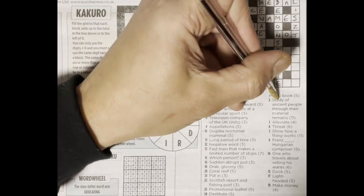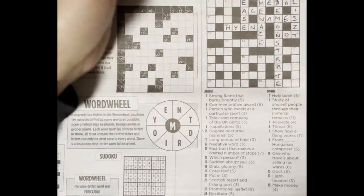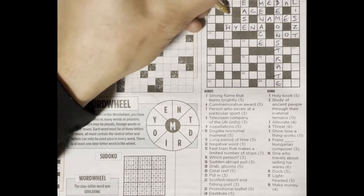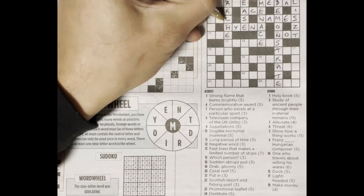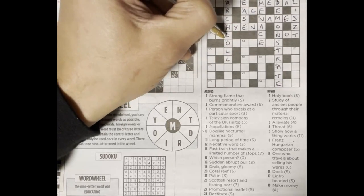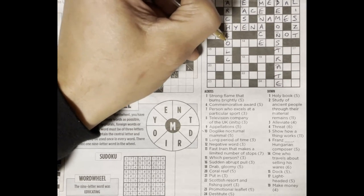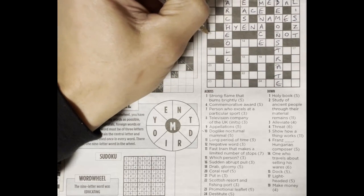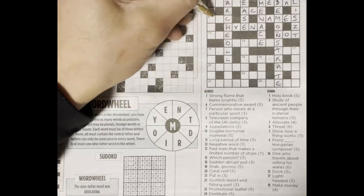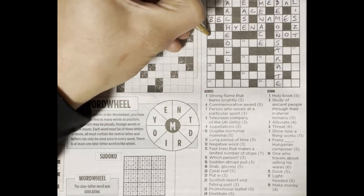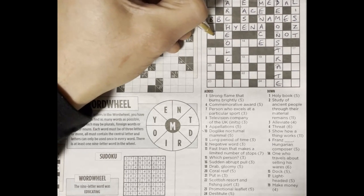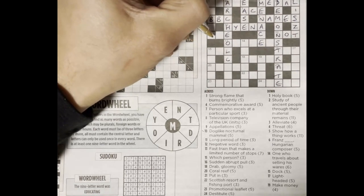Two down, study of ancient people through their material remains. Eleven down, eleven letters, archaeology. Oh no, it's a tough spelling. I think I've got it wrong. Is it A-E? Eleven across, long period of time, could be age. Six across, that could be BBC, then that could be A. Then it could be Bible, but then that would be E. So maybe eon or era, so that is incorrect.